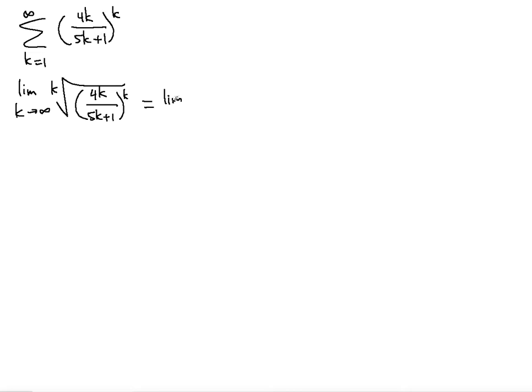So we're going to be dealing with the inner sequence, which is 4k over 5k plus 1. We're going to get 4k divided by 5k plus 1. This is now the standard limit that you should know how to do.